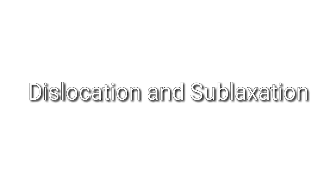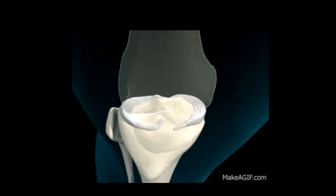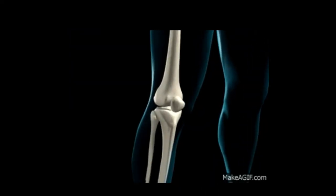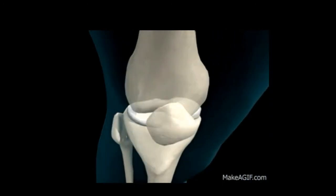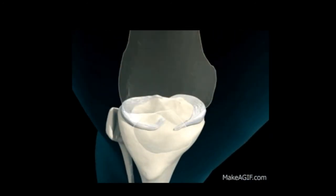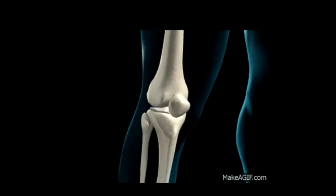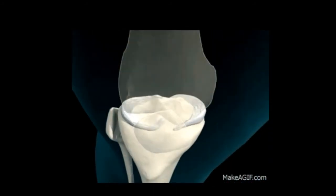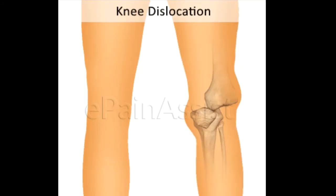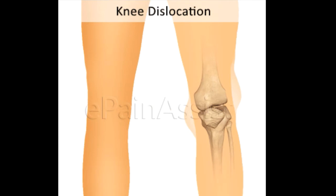Now we will discuss what is dislocation and what is subluxation. A joint is made up of articulation of two or more bones — when two or more bones meet at a point they form a joint. When one of those bones completely moves out of its socket and leaves its specific position, that is called dislocation. Dislocation means the bone completely gets out of its socket.